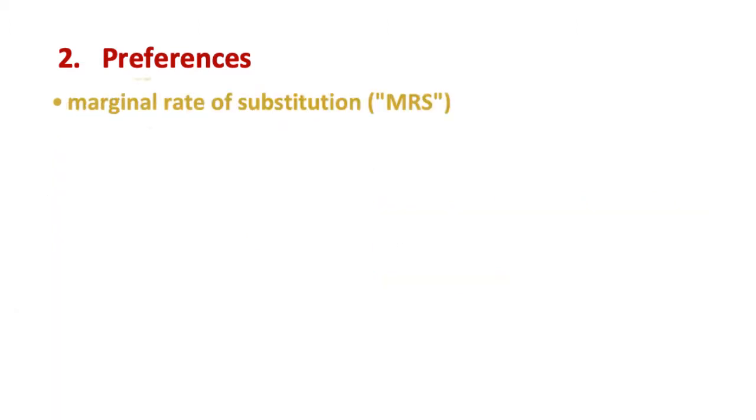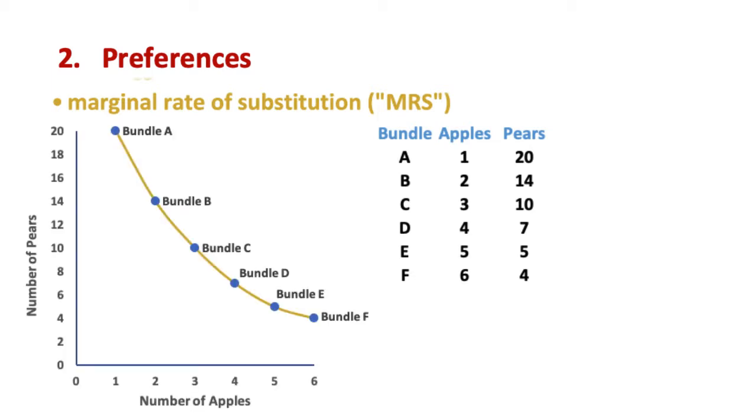Let's consider the following 6 bundles of apples and pears and let's assume they all represent the same level of utility. Here is the diagram. We begin at bundle A with 1 apple and 20 pears. Now, if we were to instead have 2 apples, how many pears do we need to give up? In this example, we would need to give up 6 pears to get to bundle B. Similarly, if we were to have another apple, we would need to give up 4 pears. And so on.